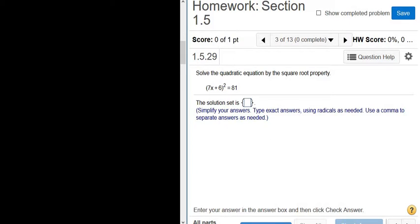Solve the quadratic equation by the square root property. We have 7x plus 6 in parentheses squared, and that's equal to 81.